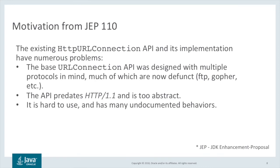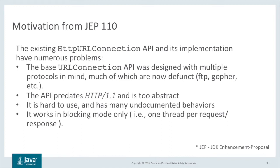Given that URL Connection is protocol agnostic, it can be a little cumbersome to use for HTTP, since it suffers from restrictions of being a common protocol API. While there is a concrete HTTP URL connection subtype, in many cases there still just isn't any natural place to document some of the HTTP-specific behaviour. URL Connection is based on Java I/O streams, which are inherently blocking. This may not have been such a limitation back in 1996, but it is today.